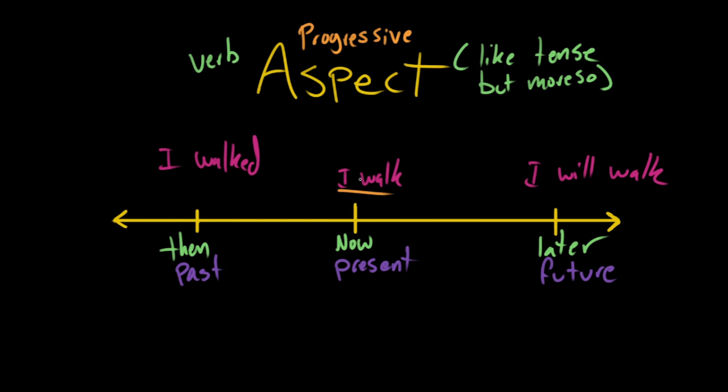But aspect allows us to talk about things that are ongoing. And that's what we call the progressive, because it's progressing, it's going, it's happening. So if we are telling a story and we are inside that moment, we can use the progressive aspect.